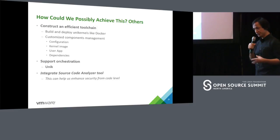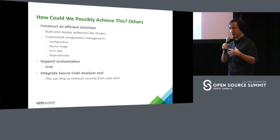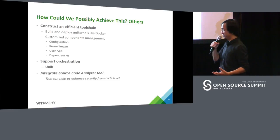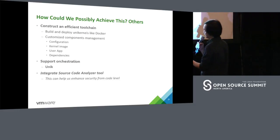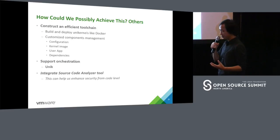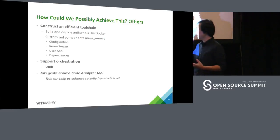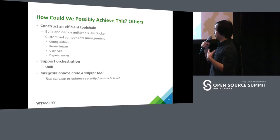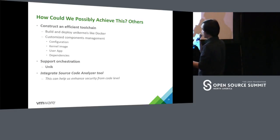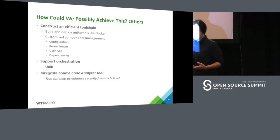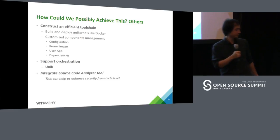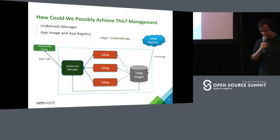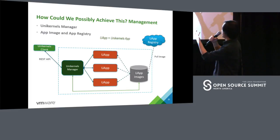Besides unikernel Linux itself, we need an efficient tool to compile applications into unikernel Linux. At this point we align with the Dockerfile format. For distribution, I'd like to divide the unikernel into different parts: configuration, unikernel image, your application, and its dependencies. For orchestration, Unik has already done well, so we just need to integrate our unikernel Linux into Unik. The last component is integrating source code scanning and security tools, because whether we talk about cloud or IoT devices, security is really important.